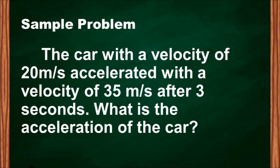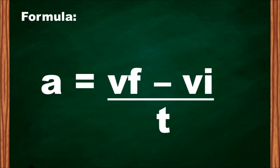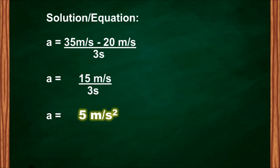Remember, in solving a problem we follow steps. First, identify the given: final velocity is 35 meters per second, initial velocity is 20 meters per second, and time is 3 seconds. We are looking for acceleration. Using the formula: a = (35 m/s − 20 m/s) ÷ 3 s = 15 m/s ÷ 3 s = 5 meters per second squared.